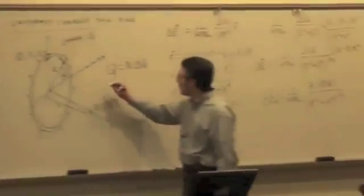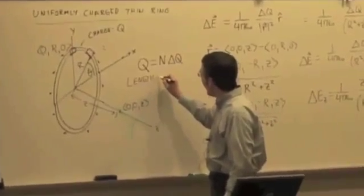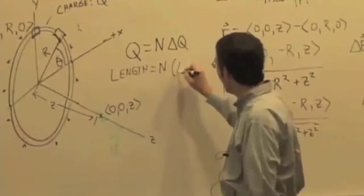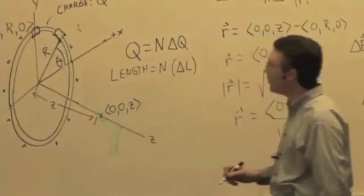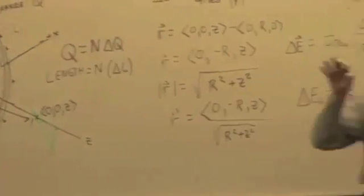So how do you actually get this? If the length has to be equal to n times delta L, what's the total length of the circle? 2 pi r.